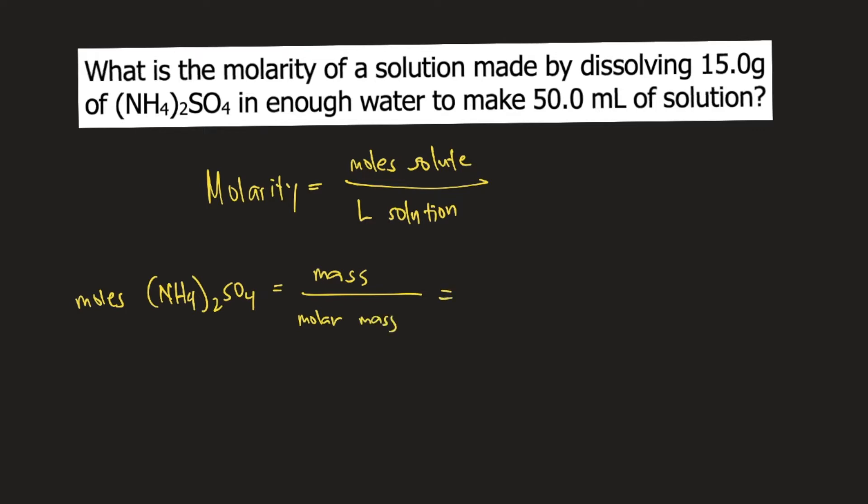The mass of ammonium sulfate in the problem is 15.0 grams. Dividing by the molar mass of ammonium sulfate, which is 132.154 grams per mole, we get 15.0 divided by 132.154, which equals 0.1135 moles.